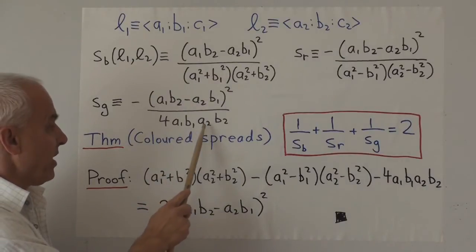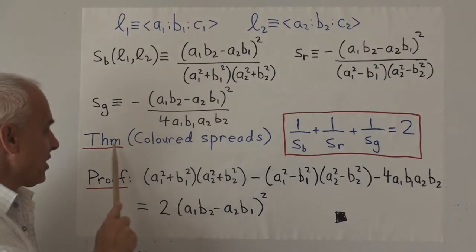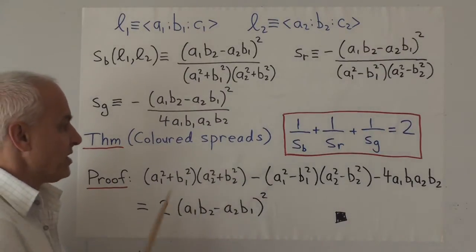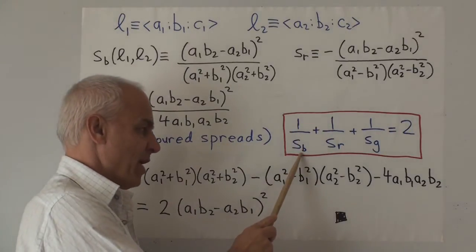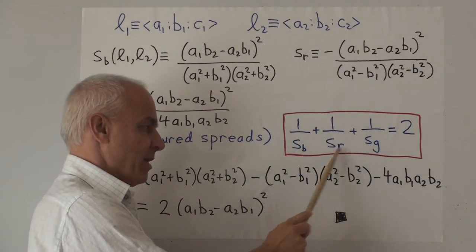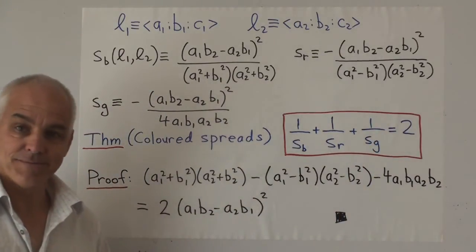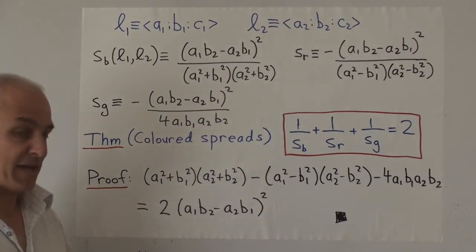And here is the theorem that connects these three numbers. Let's call it the colored spreads theorem. It says that 1/sᵦ + 1/sᵣ + 1/sᵍ = 2. And here's the proof. It's basically a one line consequence of this identity.